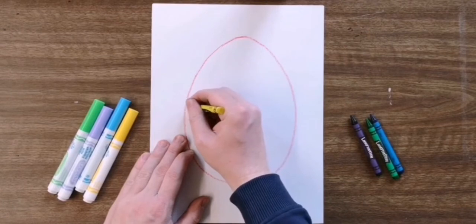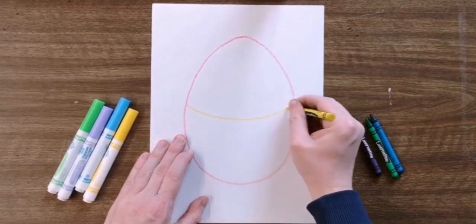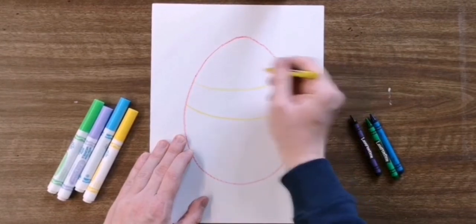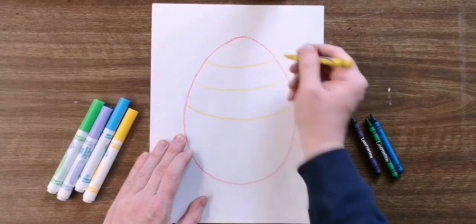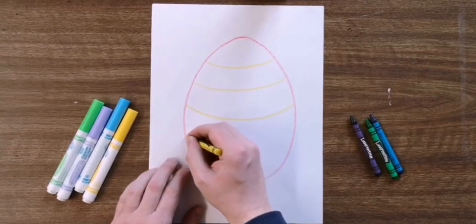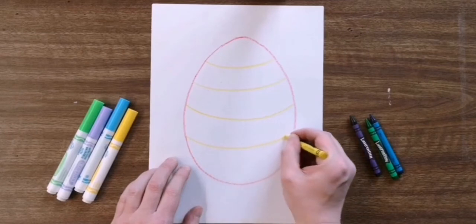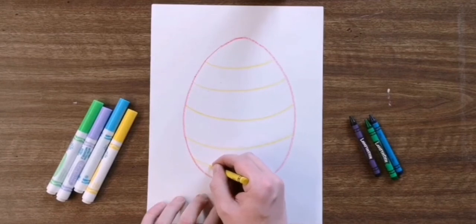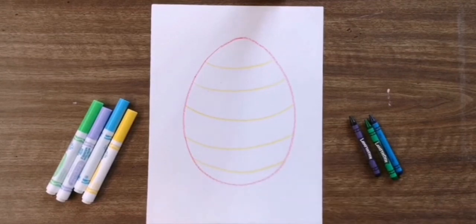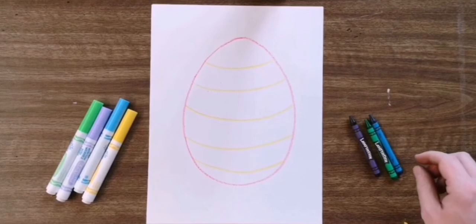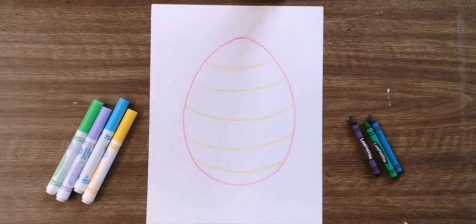So I'm going to start in the middle. And I'm going to make a few more lines. Now you can make any type of design you want on your egg. I'm going to go with a bunch of shapes today and patterns. But it's your artwork, you can do it however you want.